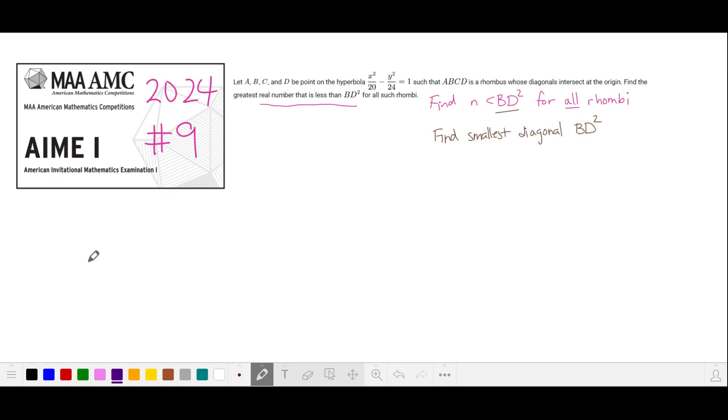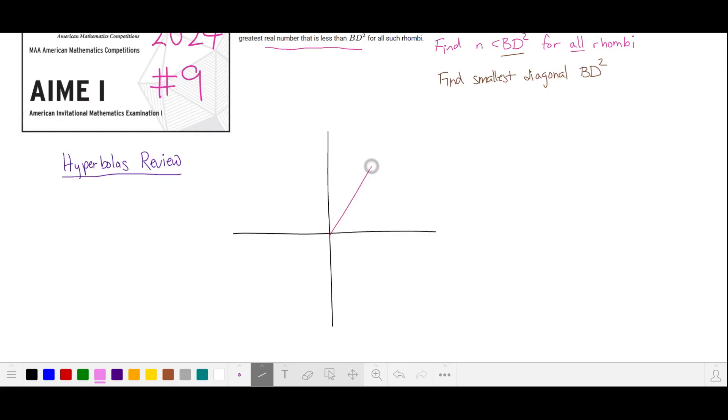Let's briefly review hyperbolas. The hyperbola in the problem statement is centered at the origin, so we'll draw the axes, and then we'll draw a pair of asymptotes. Finally, I'll sketch the hyperbola itself. The curves of the hyperbola gradually approach the asymptotes, but they never cross them.